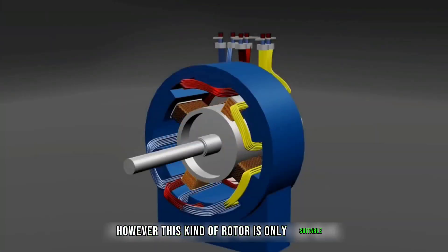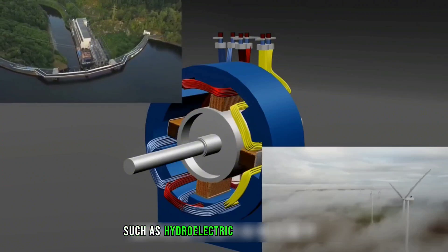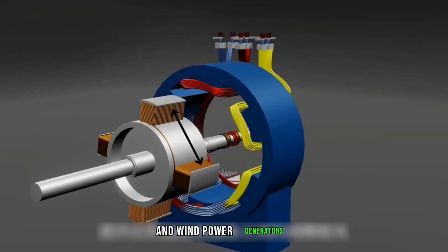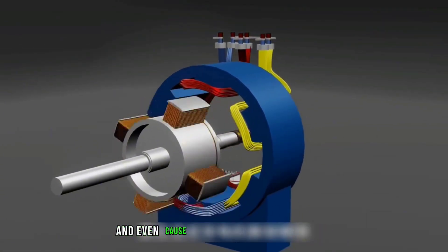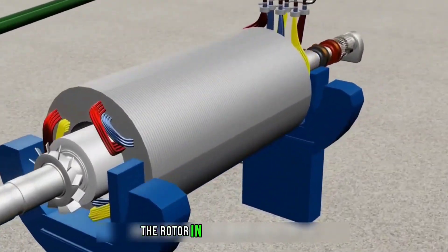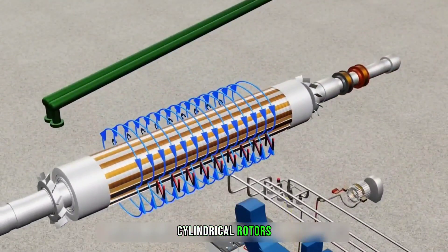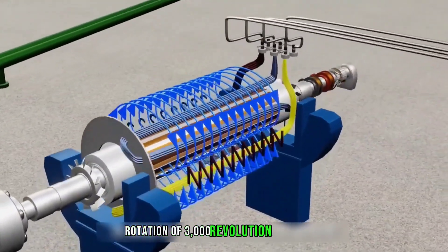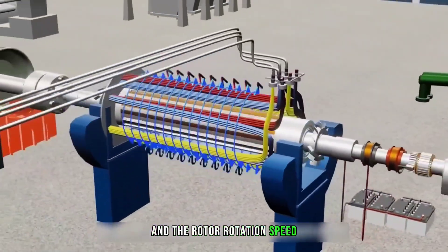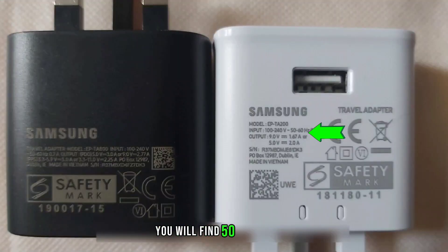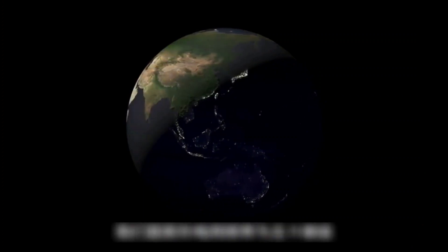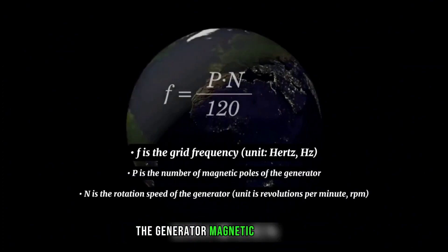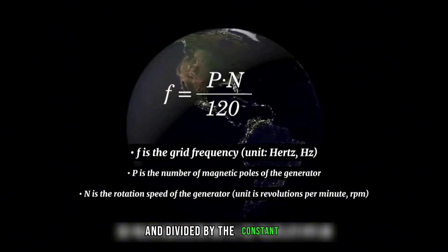However, this kind of rotor is only suitable for slow-speed power generation equipment, such as hydroelectric and wind power generators, because the gap between its magnetic poles is large and high-speed rotation will cause imbalance and even cause the generator to fall apart. For example, the rotor in a thermal generator uses a two-pole cylindrical rotor to meet the high-speed rotation of 3,000 revolutions per minute. The rotor speed determines the frequency of the power grid — you will find 50 to 60 hertz marked on many chargers. The grid frequency depends on national or regional standards, with most countries using 50 hertz. Its calculation formula is: generator pole pair number multiplied by generator speed, divided by the constant 120.